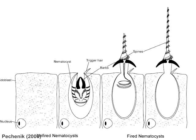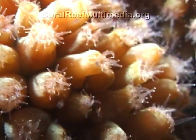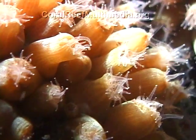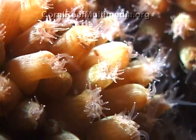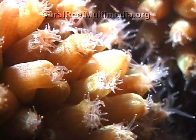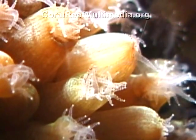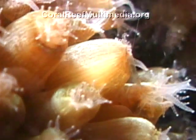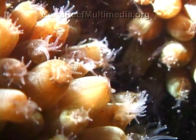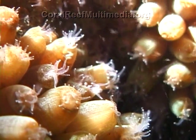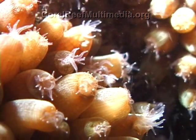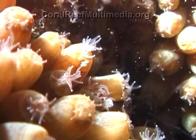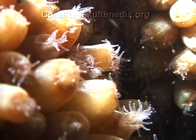Each polyp is surrounded by tentacles equipped with nematocyst cells. By extending their tentacles, corals are able to trap plankton in the water column. The trapped particles are then transported to the mouth by the cilia at the coral tissue surface. This is one of several methods for corals to gain energy in the form of organic carbon and nutrients such as phosphate and nitrogen.